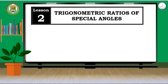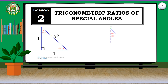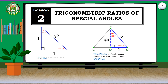Trigonometric ratios of special angles. In this lesson, you will use the concepts you have learned in the previous lesson to evaluate the trigonometric ratios of special angles. There are two triangles — the isosceles and equilateral triangles — that are frequently used in mathematics to generate exact values of the trigonometric ratios. Consider the succeeding activities to develop mastery of the topic.